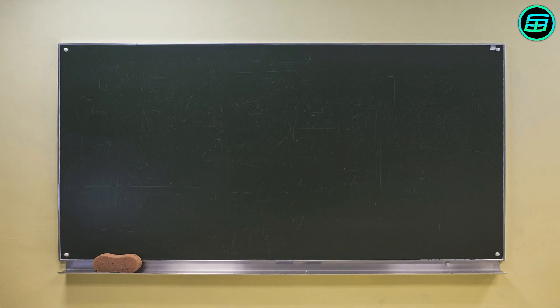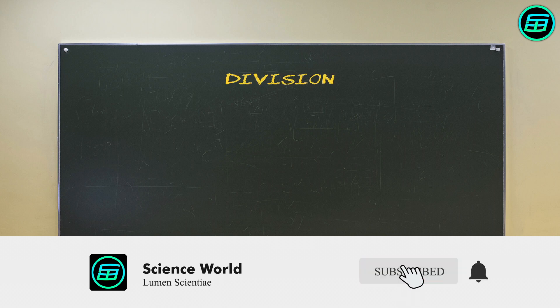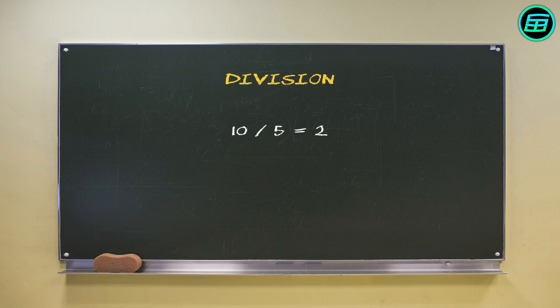To understand why numbers can't be divided by zero, we need to be clear about what division is. If we divide 10 by 5, the result 2 tells us how many fives there are in 10. If we divide 10 by zero, then following the same logic, it should tell us how many zeros there are in 10. So how many zeros are there in 10?